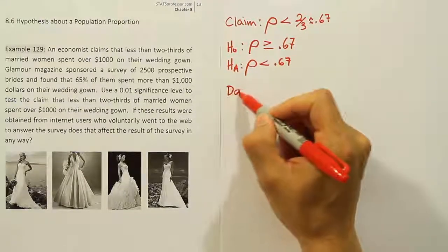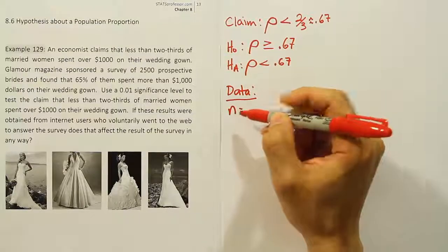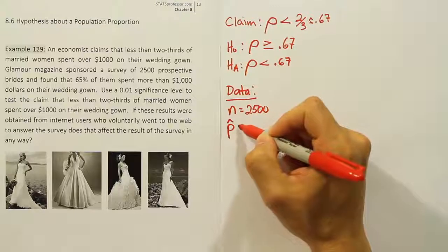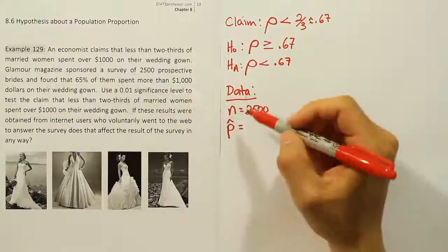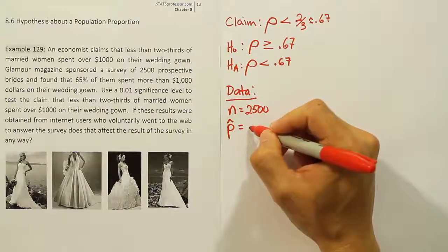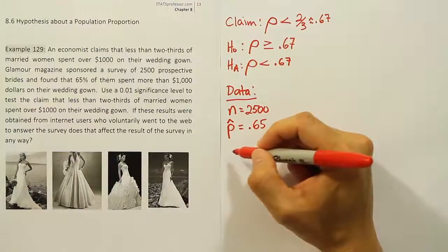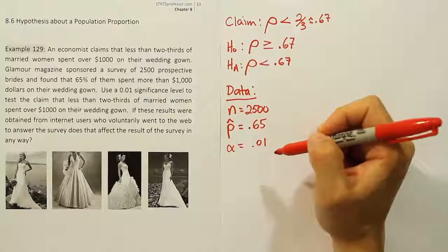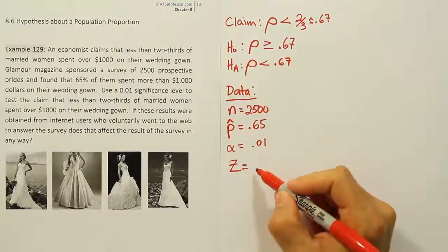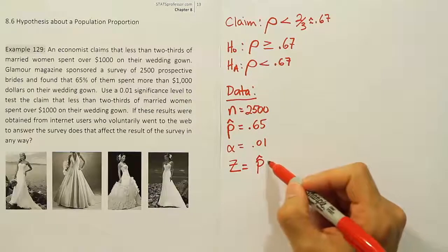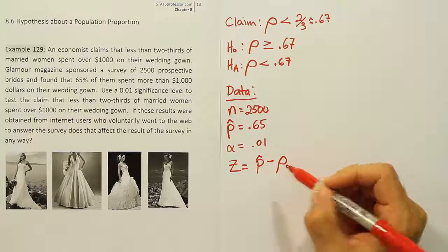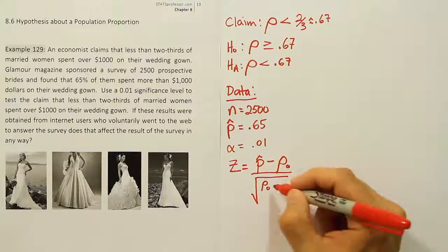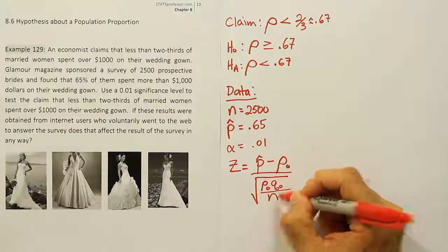Now we collect the data. The sample size is 2,500 women surveyed. The sample proportion, p-hat, is 65% — or 0.65 as a decimal — because 65% of the 2,500 women spent more than $1,000 on their wedding gown. The significance level is 0.01. We'll plug this into a test statistic formula, which is a z-formula. We compare p-hat to the proportion from the null hypothesis, divided by the square root of p-naught times q-naught divided by n.